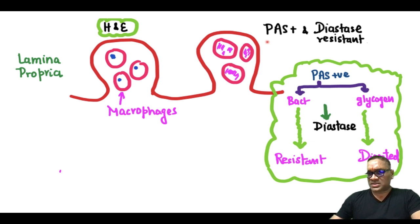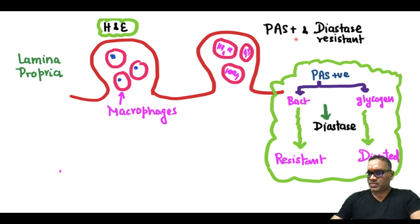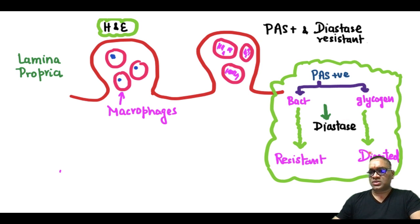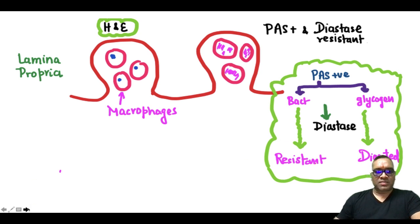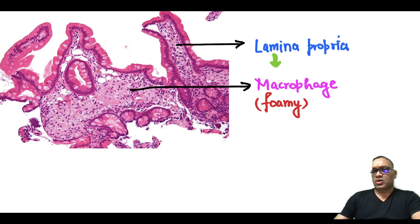On PAS staining with diastase resistant, you can identify the bacteria because they are PAS-positive and diastase resistant. Why are we adding diastase? So that diastase can digest the glycogen and the bacteria will be remaining there. So these are PAS-positive diastase resistant — that will be Tropheryma whipplei.